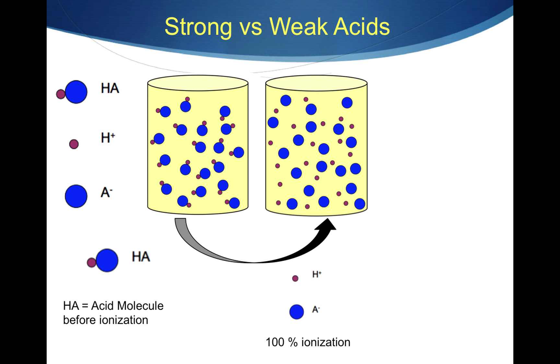When all of the HA molecules ionize into the anion and cation, you have 100% ionization, which is a strong acid. Strong acids are good conductors of electricity.